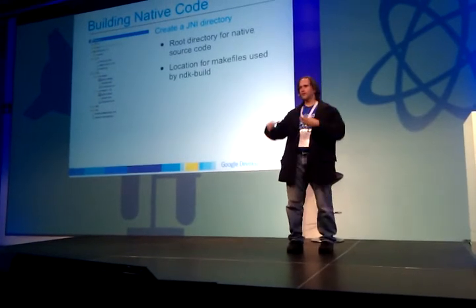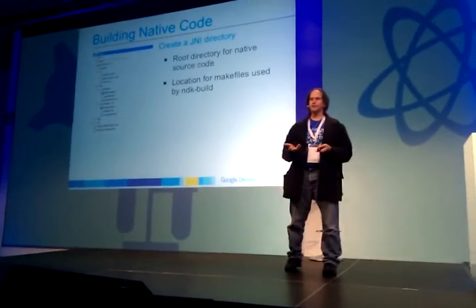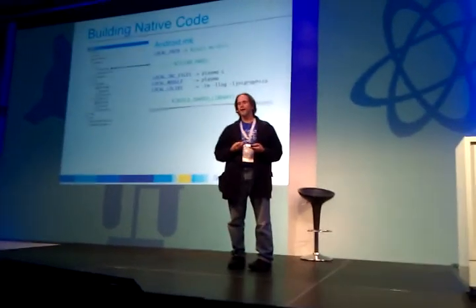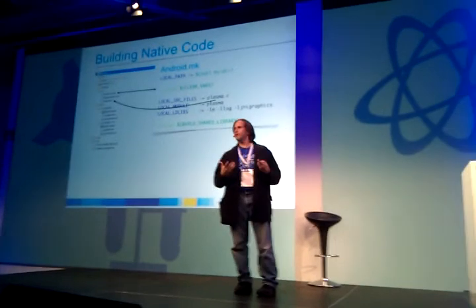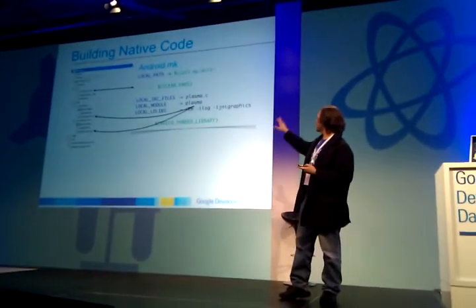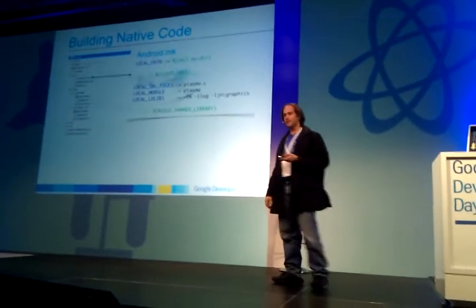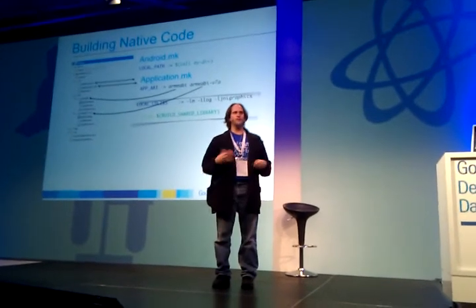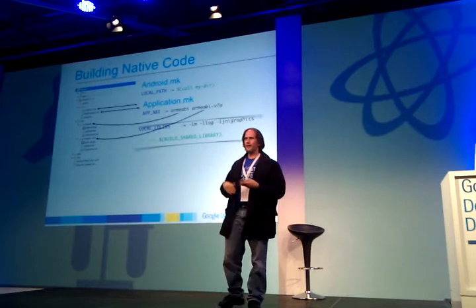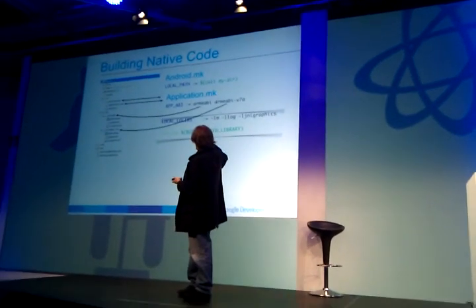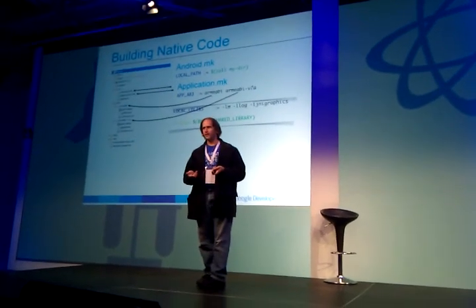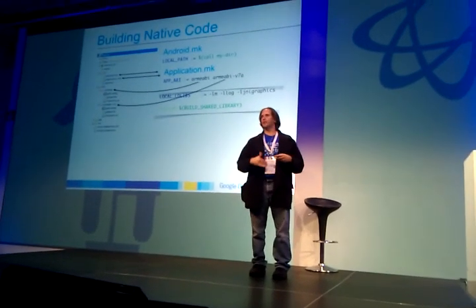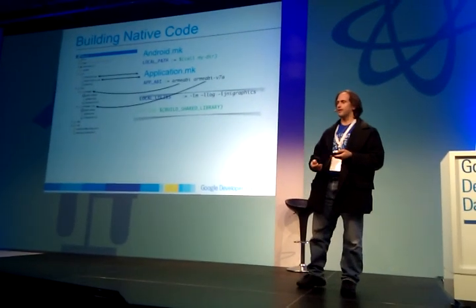Let's talk about building native code. In your project, you're going to create a JNI directory, which is the root directory for your native code and also the location for the makefiles used by the NDK builder. You're going to have an Android.mk with source files — you can use wildcards — and the libraries you're going to build. In this case, we have Plasma as an example library. You also have an Application.mk, which is used to specify, among other things, what version of the ABI you're building for. In this case, you're building for ARM5 and ARM7. If you build for ARM7, Android Market is smart enough to hide your application from ARM5 devices, which is one way of filtering out lower-performance devices.